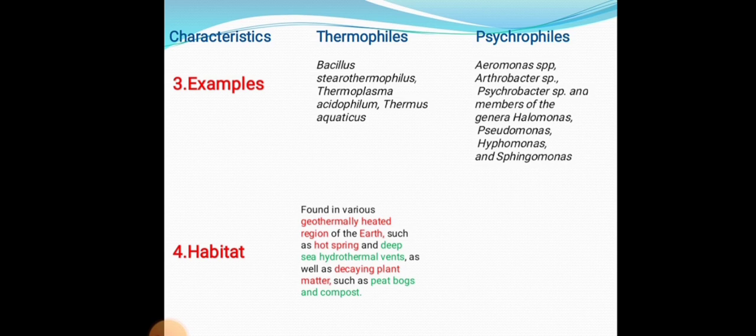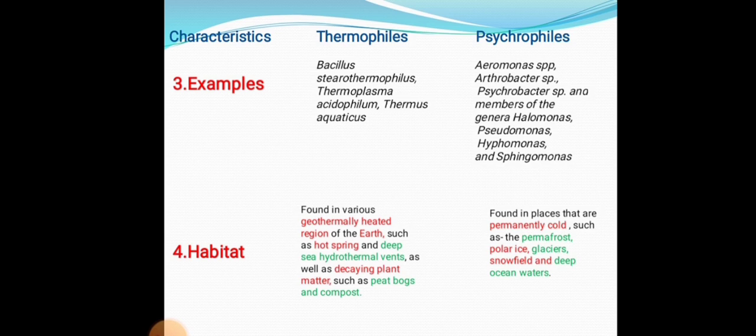Thermophiles are also found in decaying plant matter such as peat bogs and compost. Whereas psychrophiles grow and survive at low temperatures, so they are found in places that are permanently cold, such as permafrost, polar ice, glaciers, snowfields, and deep ocean water.